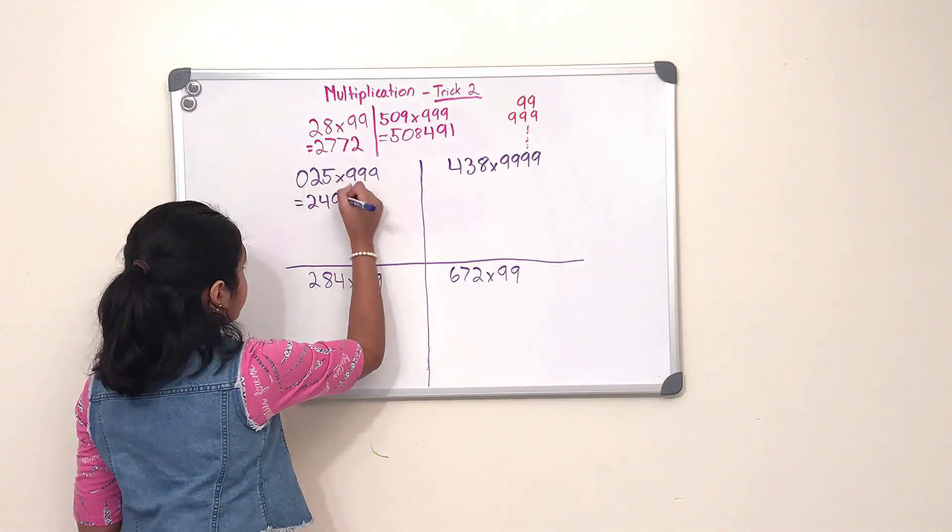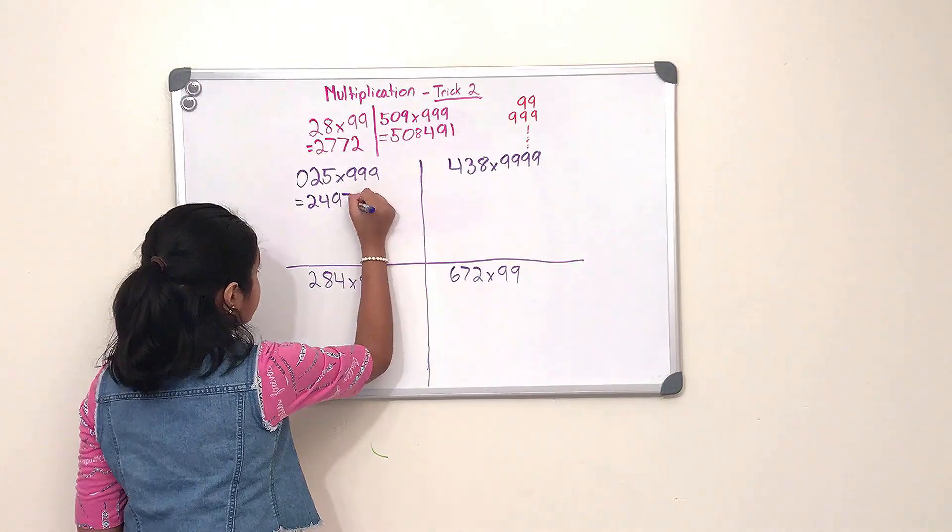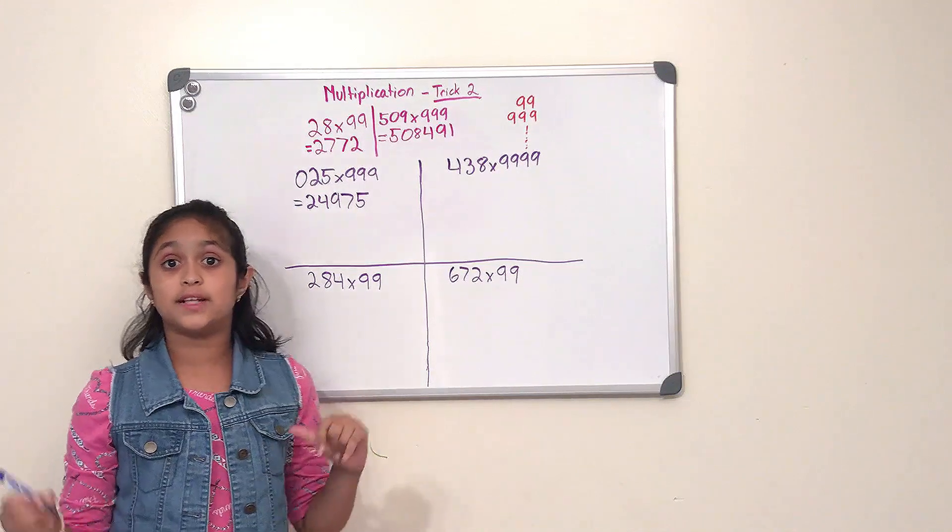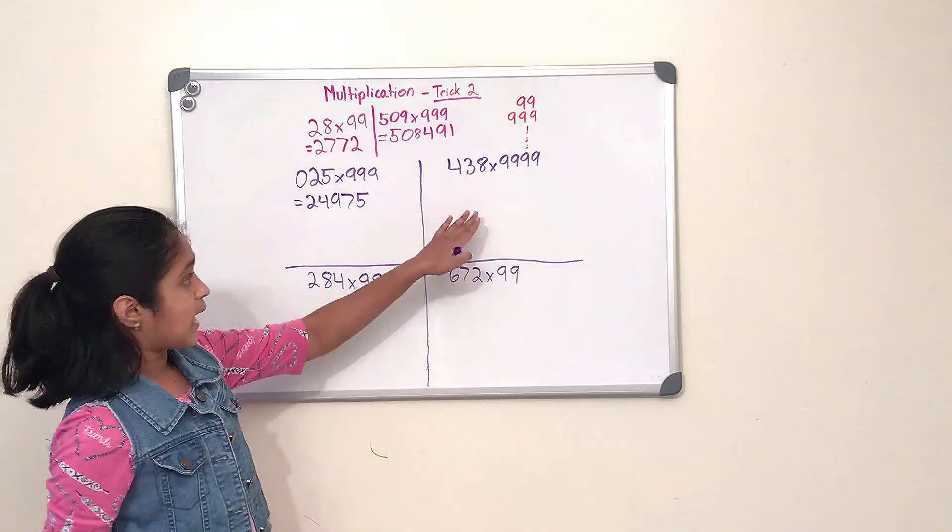So nine minus zero, that is nine, nine minus two, that is seven, and ten minus five, and that is five. So this is our product: 24,975, and that's pretty simple.